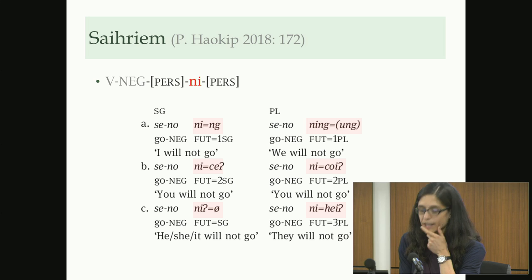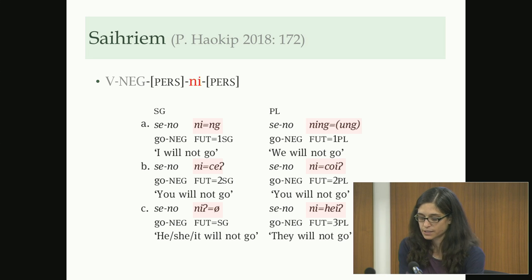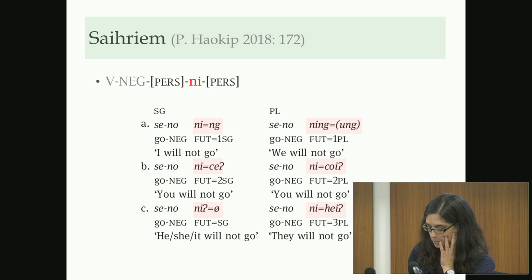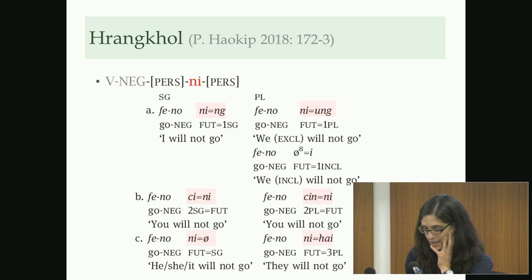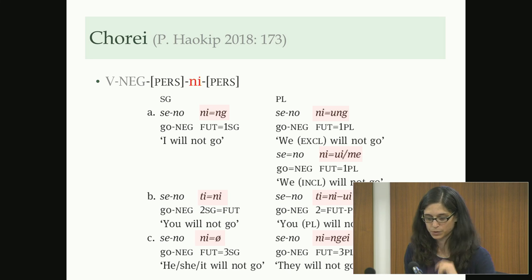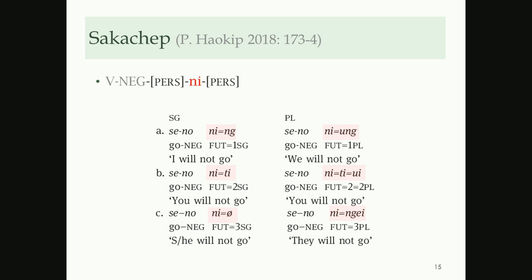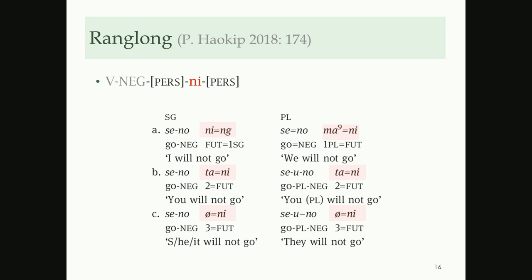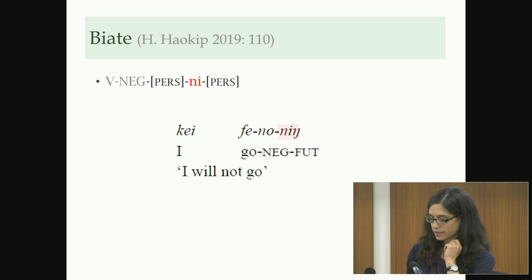Moving from Chandel district languages, here are some languages of the Barak Valley area in southern Assam. Cythrium works the same way — 'seno ning', 'seno nite', the same basic idea. Frankel works the same, with a bit of variation especially in the second person forms. Chore again looks really the same. The only variation you really see is in the second and third person forms; the first person forms are extremely similar.